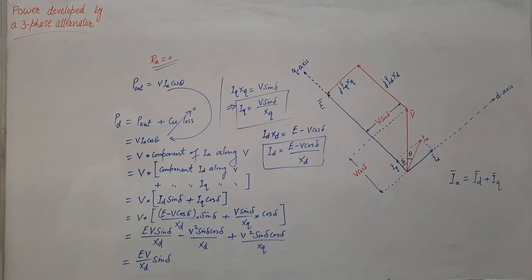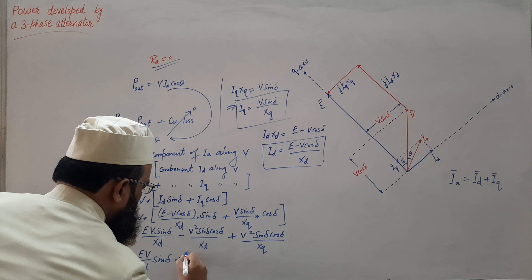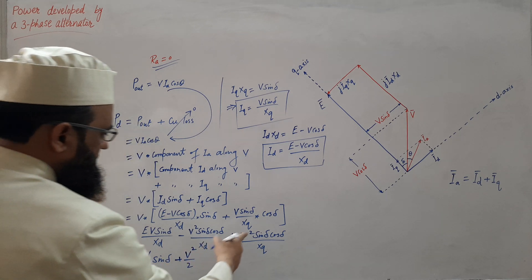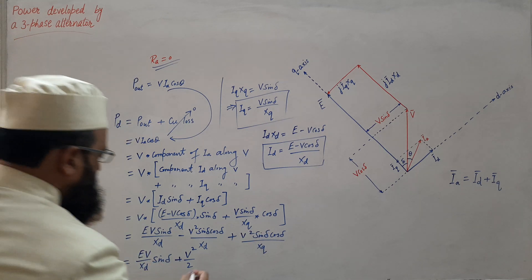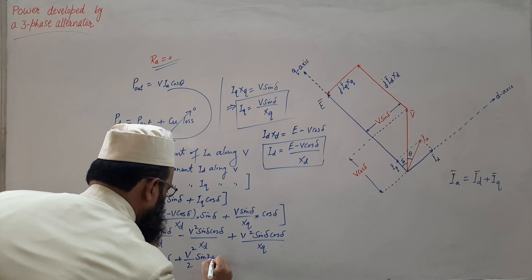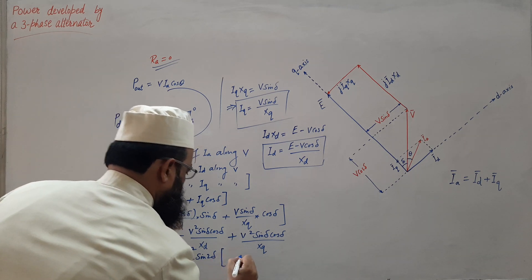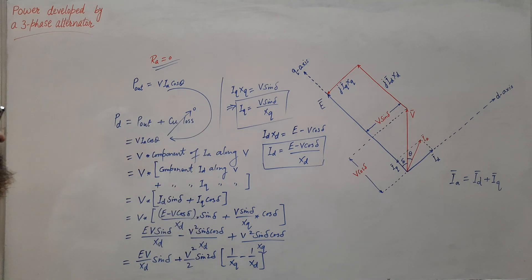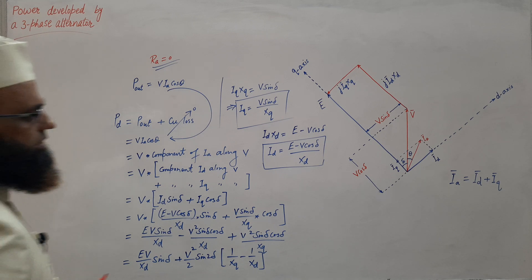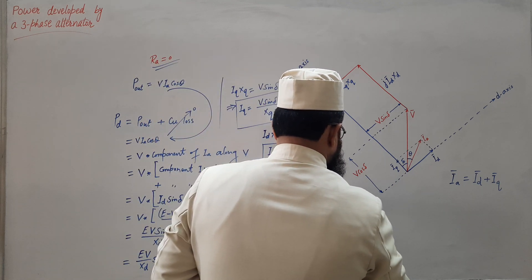We know that sin(δ)·cos(δ) = sin(2δ)/2, so we write sin(2δ) directly, multiplying 2 in numerator and denominator. The expression simplifies to: P = (E·V / Xd)·sin(δ) + (V²/2)·sin(2δ)·(1/Xq − 1/Xd). This is the final expression for power developed per phase for a salient pole synchronous generator.